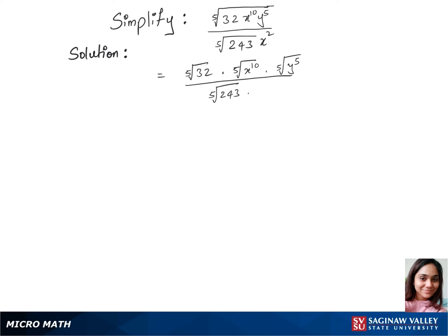In our next step, we'll write 32 as 2 power 5 times fifth root of x power 10. We'll split x power 10 to fifth root of x power 5 times fifth root of x power 5 times fifth root of y power 5.